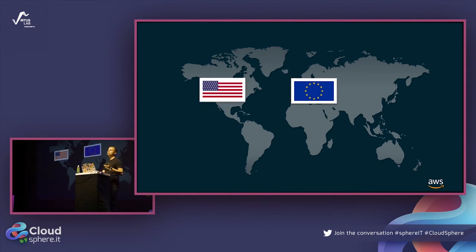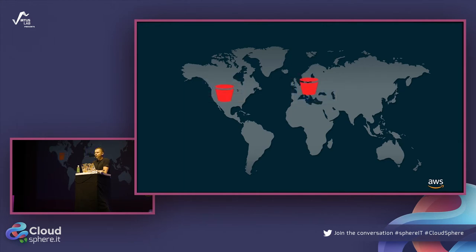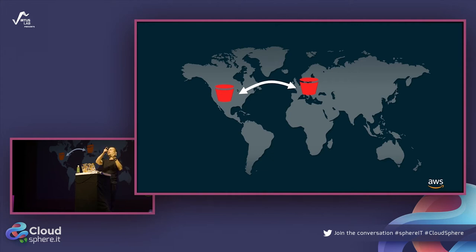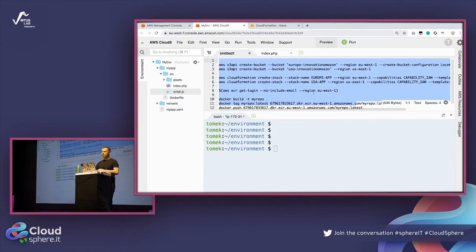We are going to build a VOD platform spanning different locations - one in the USA and one in Europe. First, we need storage for our videos. We'll use S3. We'll create two buckets in those two locations - one called 'euro-innovation-amazon' in EU (Ireland), and one called 'usa-innovation-amazon' in the USA - and configure them to replicate data across each other.